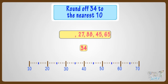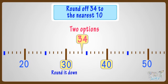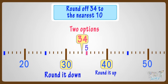Now let's take another number. We have to round off 34 to the nearest ten. Where can you fit 34 on this number line? It is somewhere between 30 and 40. We know whenever we have to round off a number we have two options: round it down or round it up. Here, 34 is below the five mark, so we will round it down to 30. Good!